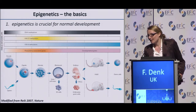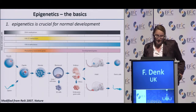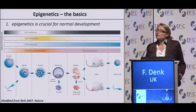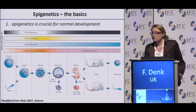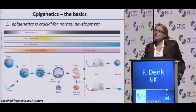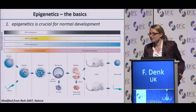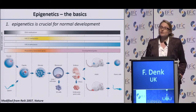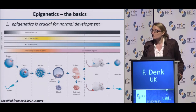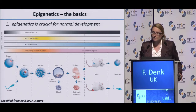Fact one: epigenetics is crucial for normal development. There is a very well-controlled global round of DNA demethylation early in development, during which pluripotency genes are expressed. When the DNA is remethylated, many other epigenetic modifications control the expression of developmental genes and ultimately help determine cell differentiation and cell fate. When something goes wrong in this process, you suffer from very serious diseases such as Rett syndrome, Angelman syndrome, and Prader-Willi syndrome.